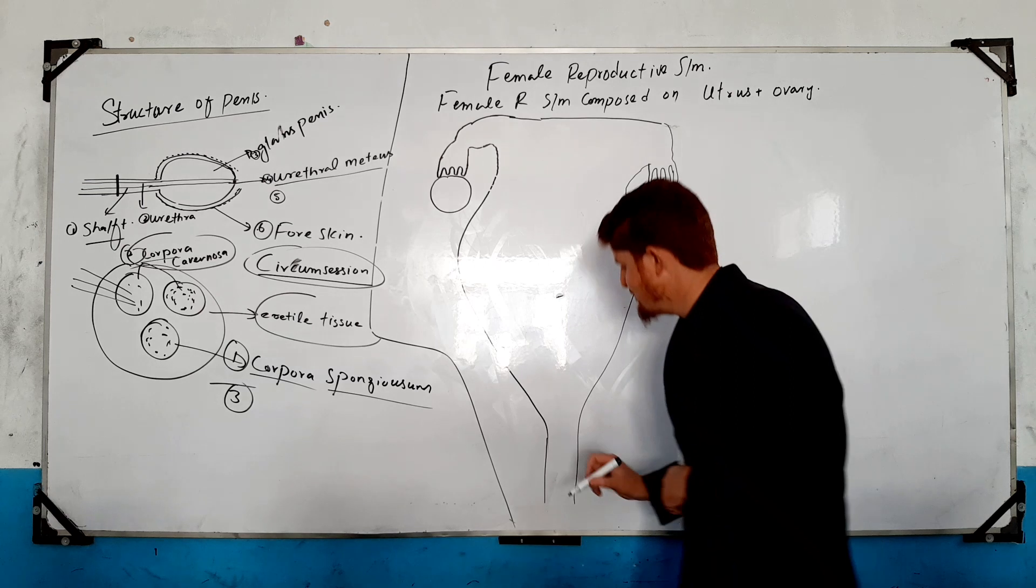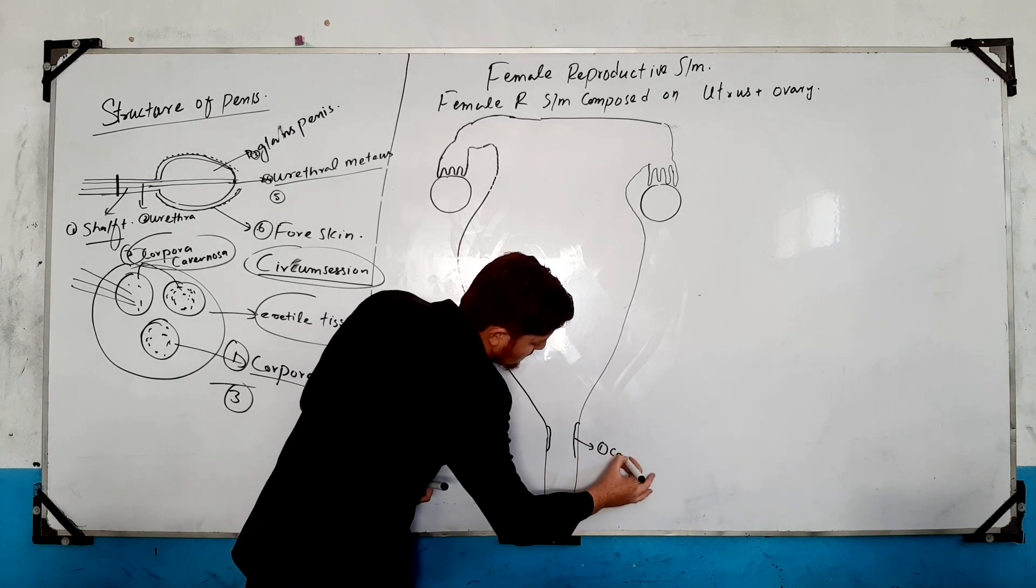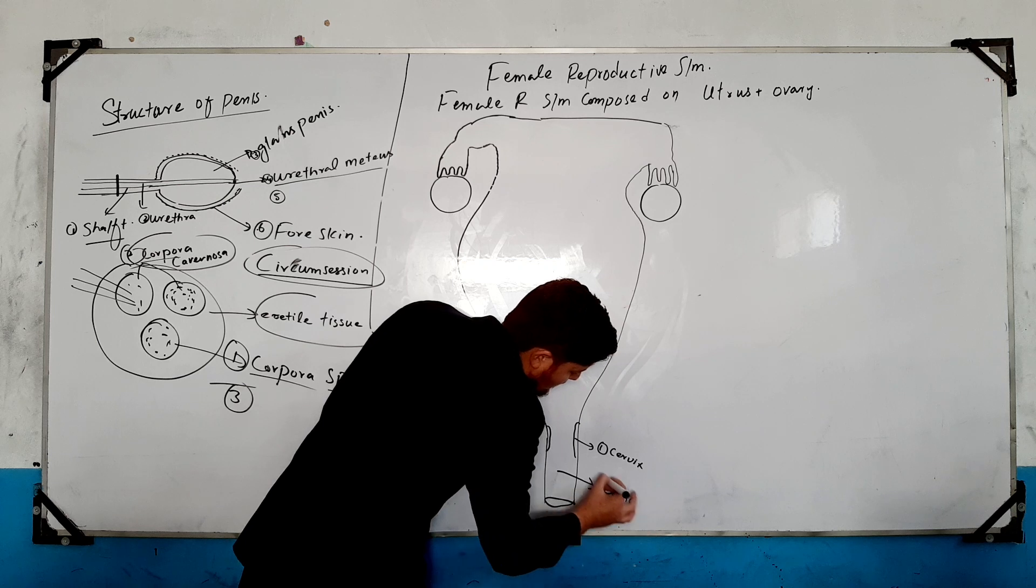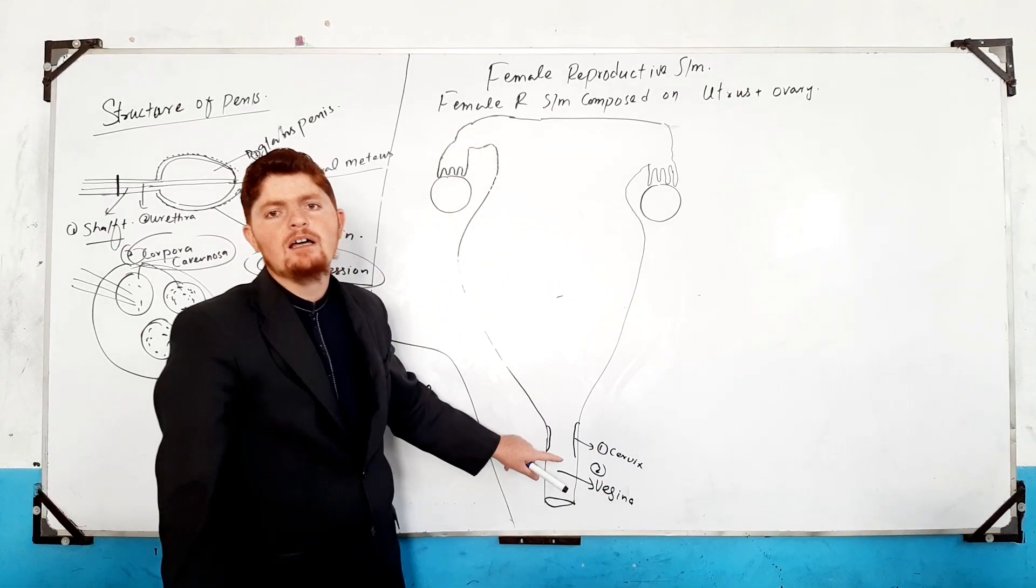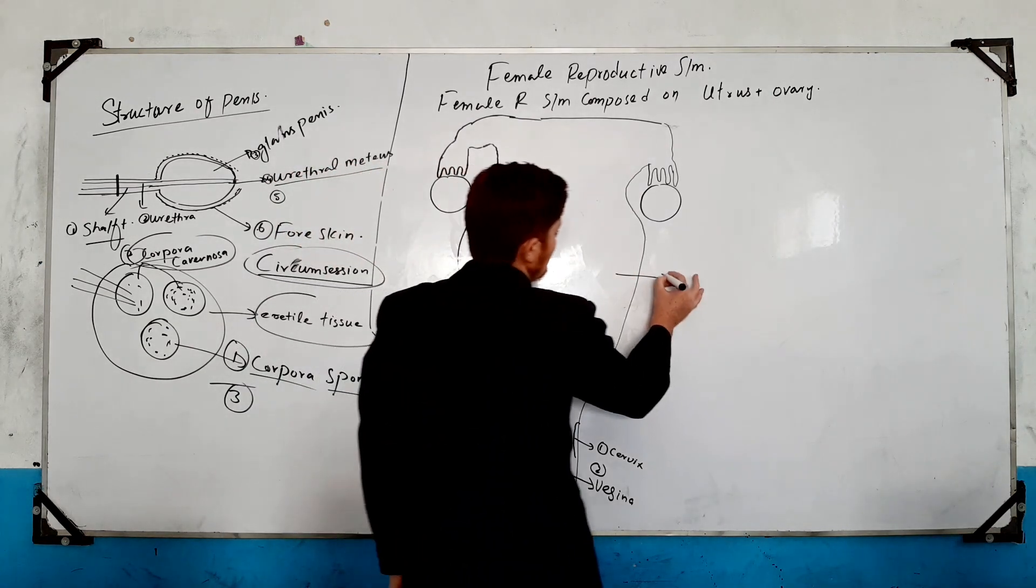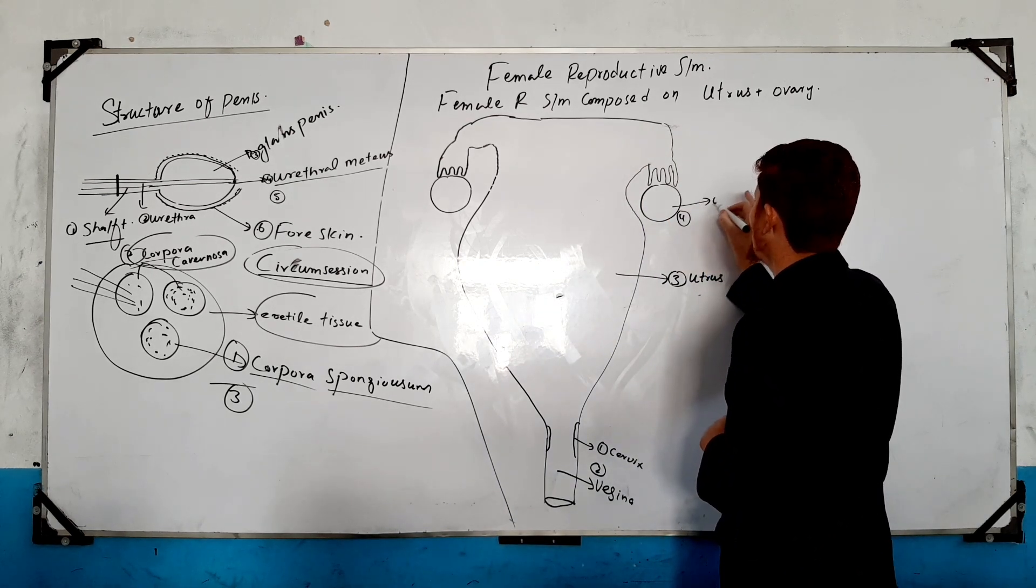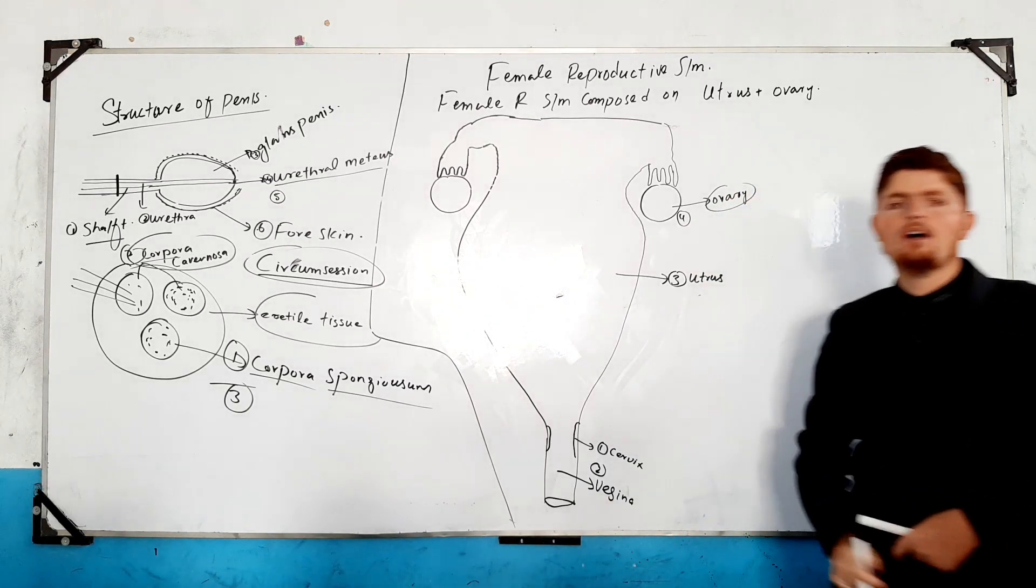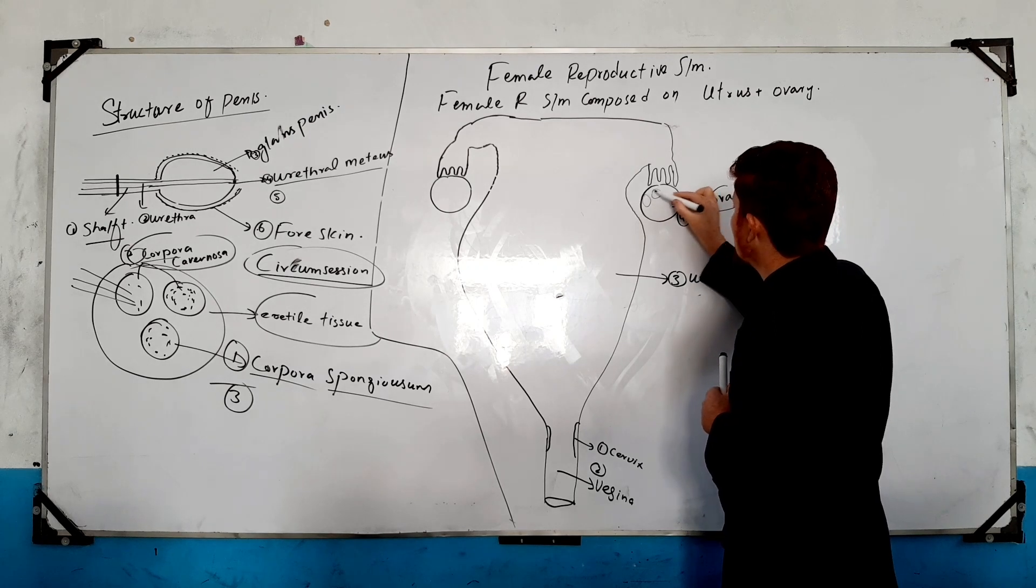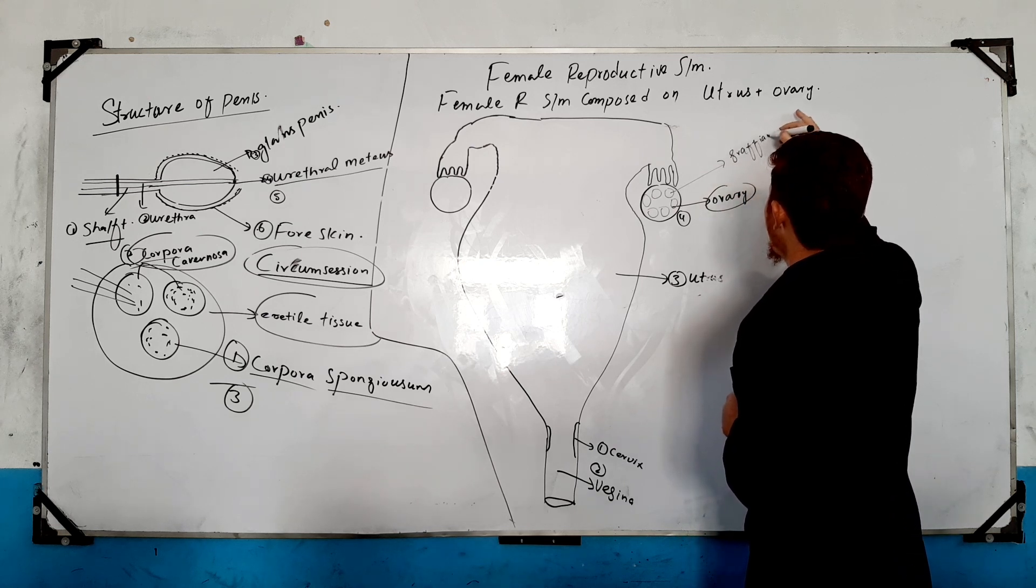This is the female reproductive system. This is the cervix. This is the vagina. This area is the uterus. This is called the ovaries. These are called the fallopian tubes.